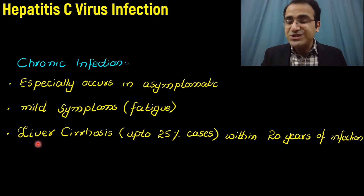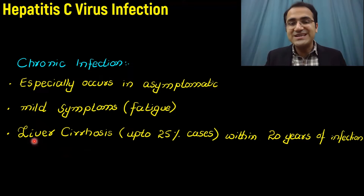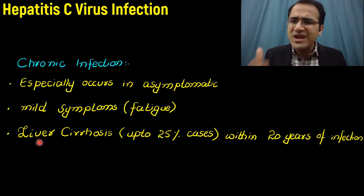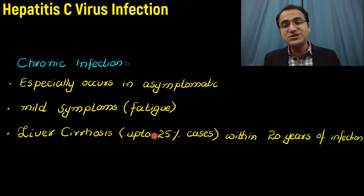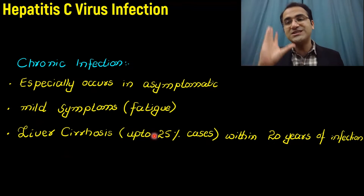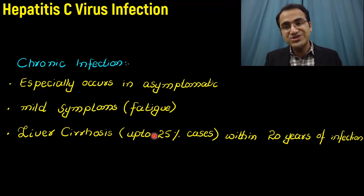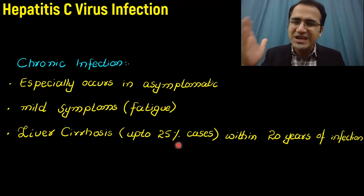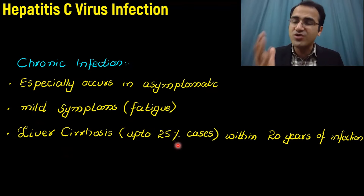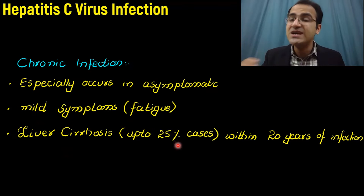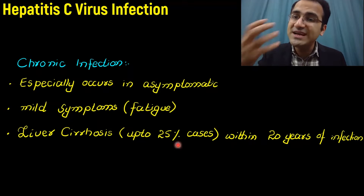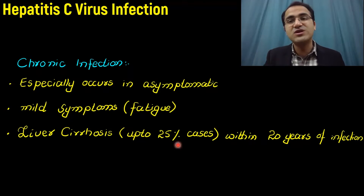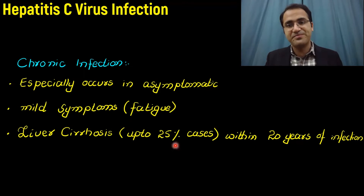Patients with chronic hepatitis C develop liver cirrhosis in up to 25% of cases within 20 years of infection due to chronic liver injury. They can also develop liver cancer — hepatocellular carcinoma.